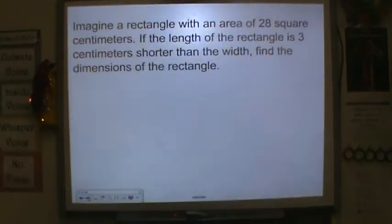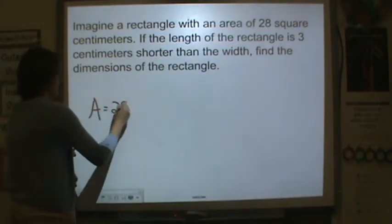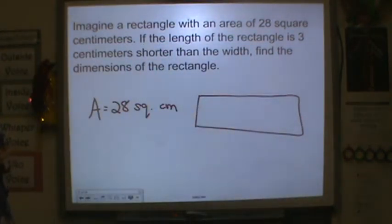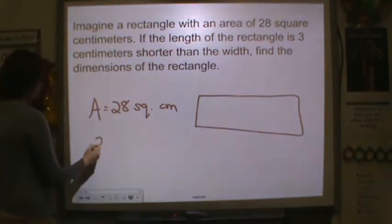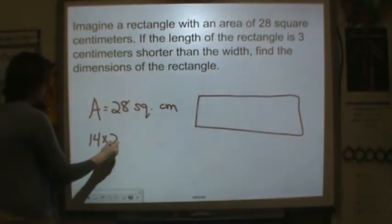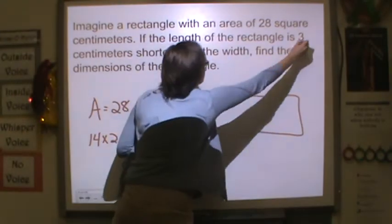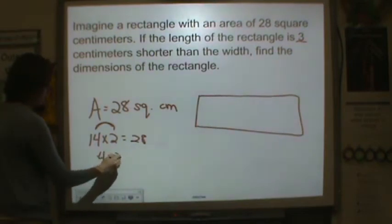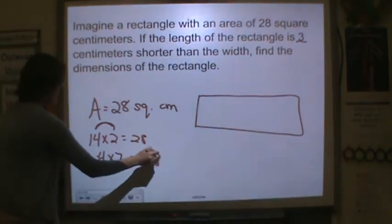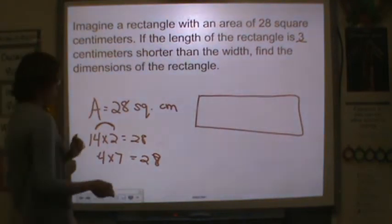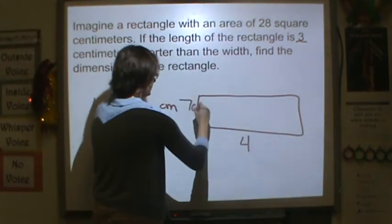Imagine a rectangle with an area of 28 square centimeters. So my area is 28 square centimeters. If the length of the rectangle is 3 centimeters shorter than the width, find the dimensions of the rectangle. Now remember, in order to find perimeter, the easy way to do it is think of numbers that you can multiply to get to 28. So 14 times 2 would get us 28, but there isn't a 3 centimeter difference between 14 and 2. So it cannot be that one. Let's try 4 times 7. So 4 times 7 is equal to 28. Is there a 3 centimeter difference? There is. So the length is 3 centimeters shorter. So my length is shorter than my width. So it's 7 centimeters by 4 centimeters.